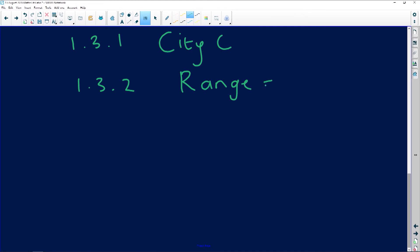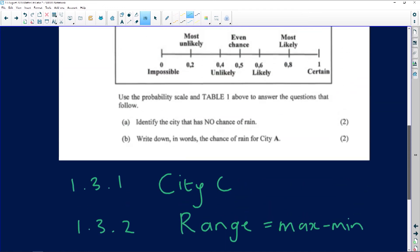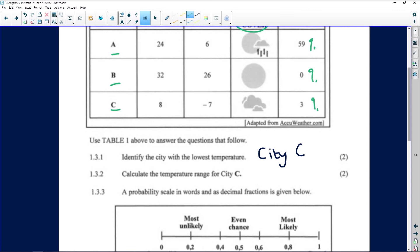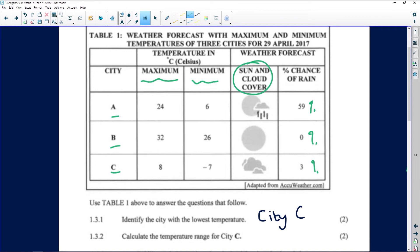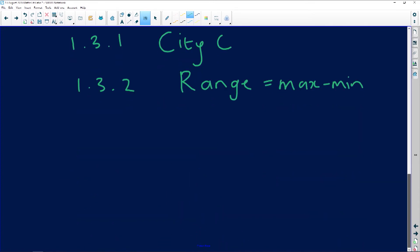We know from data handling that range equals maximum minus minimum. We know that guys, these are the things that you need to know. Cannot walk into an exam without knowing what the range is. So then if we look up here, we've got our maximum and minimum temperatures and what we need to do is take the maximum and subtract the minimum from the maximum. So it's going to be 8